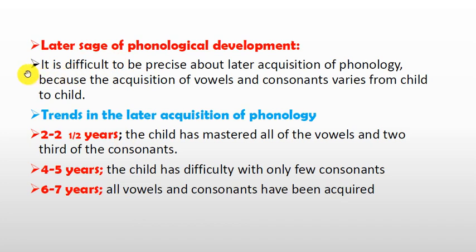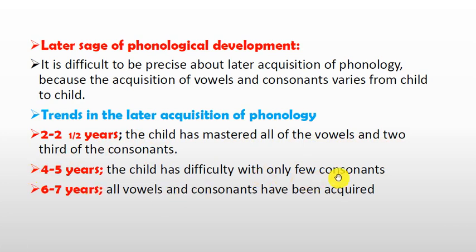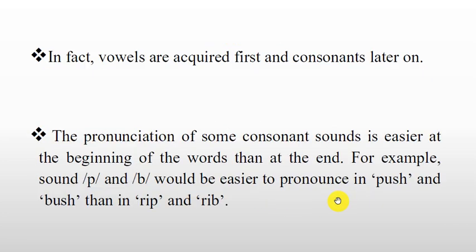It is difficult to be precise about the later acquisition of phonology because the acquisition of vowels and consonants varies from child to child. The trends are: at two to two-and-a-half years, the child has mastered all vowels and two-thirds of consonants; at four to five years, the child has difficulty with only a few consonants; and at six to seven years, all vowels and consonants have been acquired.